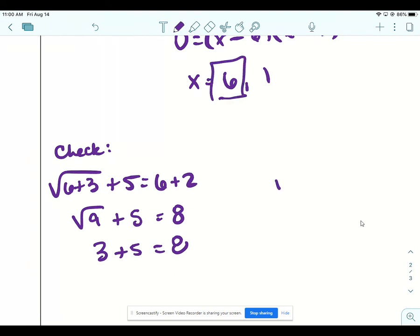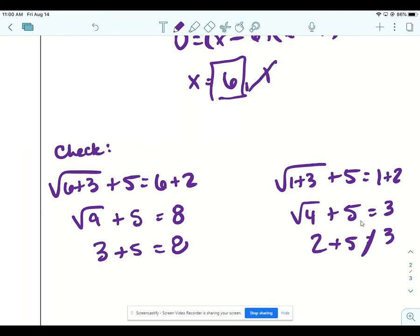All right, let's check 1. Okay, so we get the square root of 4 plus 5 is 3. I already know that's not going to work because 2 plus 5 does not equal 3. So 1 is an extraneous solution. So you would just mark it out.